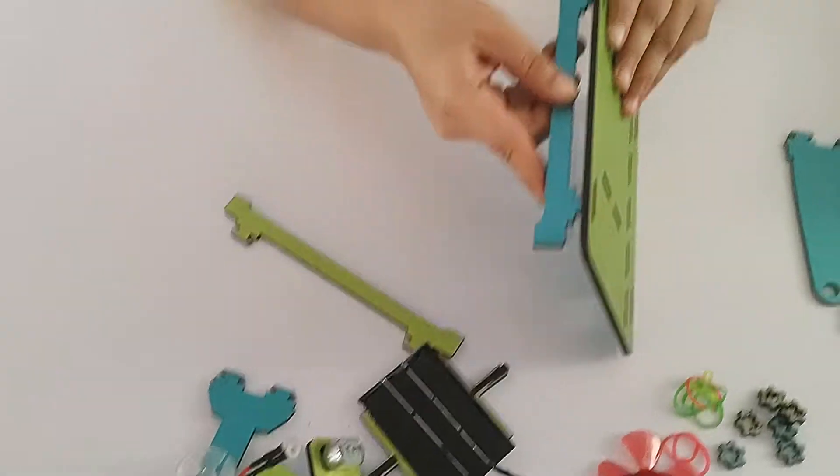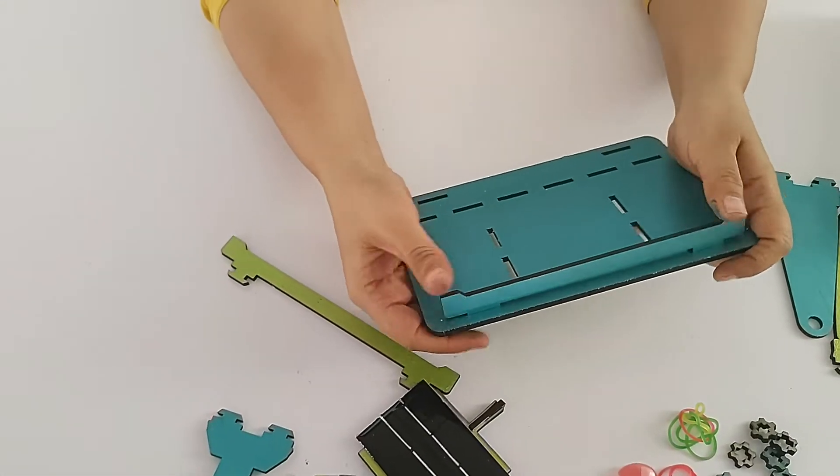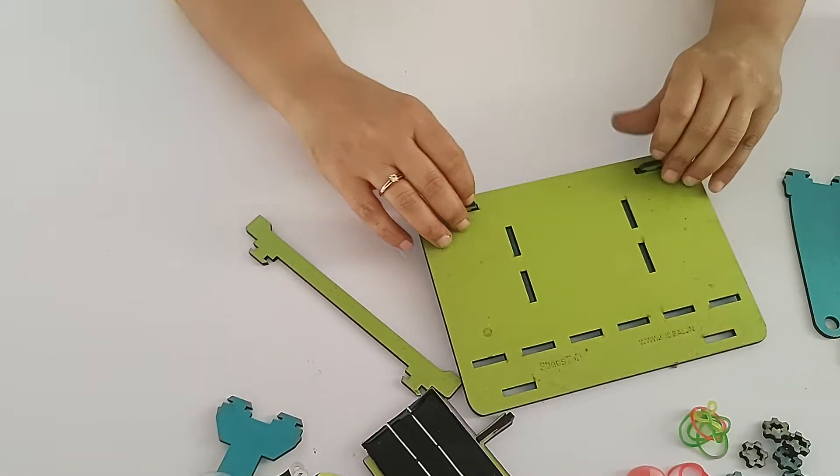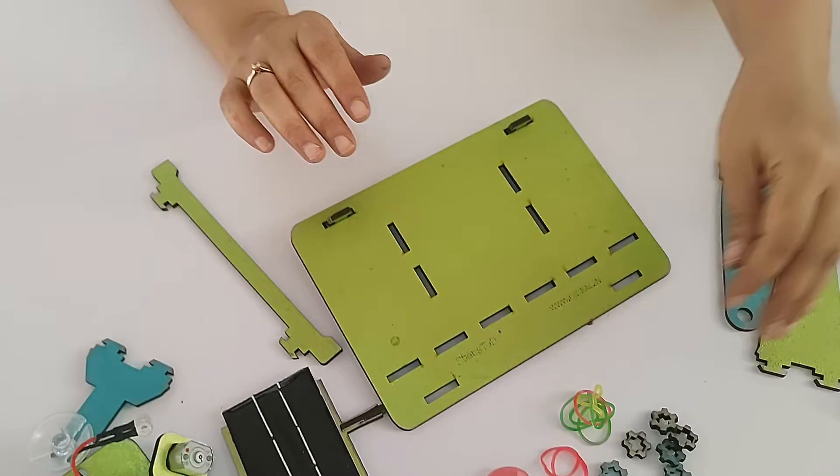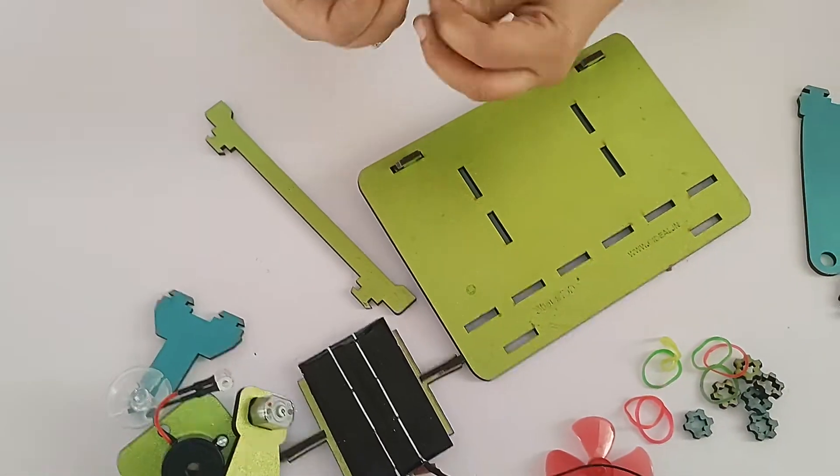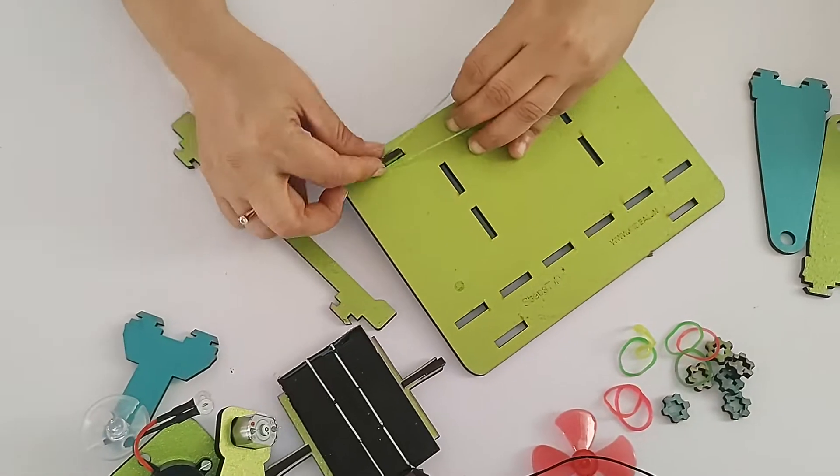These are the two long cutouts. You are supposed to insert them from the back side of the board. You can decide whichever color you want, blue or green, and you can decide accordingly. Now to fix it, just add rubber bands from the front side.